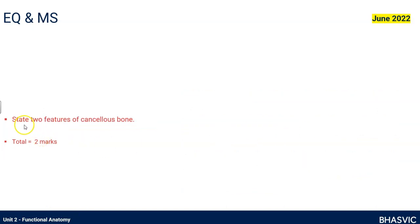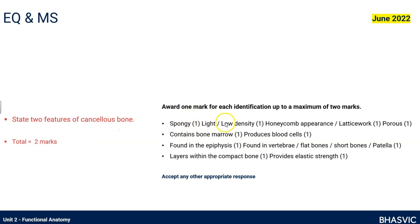A couple more exam questions. One asks you to state two features of cancellous bone — two features for two marks. Cancellous bone is the spongy honeycomb structure; it contains red bone marrow which produces red blood cells; it is found at the epiphyses; and outside the cancellous bone is compact bone, which gives it some elasticity. From the first three bullet points there are easy options to get your two marks.